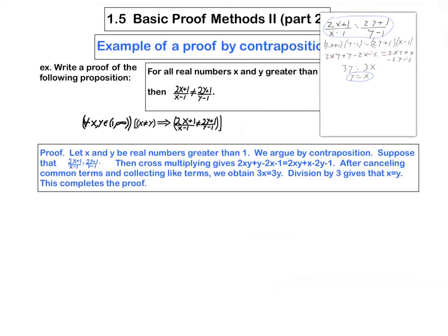Let's go over my proof. Let x and y be real numbers greater than 1 so that comes from here. We argue by contraposition so I'm warning the reader that that's the method that I'm going to use. And so we suppose the negation of this, so suppose 2x plus 1 over x minus 1 is equal to 2y plus 1 over y minus 1, and ultimately I have to deduce that x is equal to y.